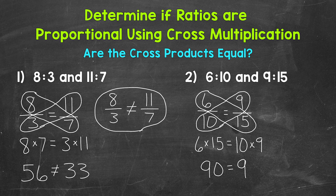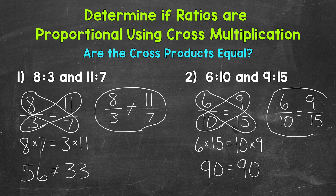Both of our cross products are 90. That means our ratios of 6 to 10 and 9 to 15 are proportional — 6 to 10 is equal or proportional to 9 to 15, so those ratios form a proportion.